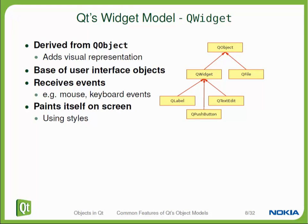QWidget is the base class for receiving events related to the windowing system, like mouse clicks, keyboard input, and resizes. This is functionality added on top of QObject. QWidget therefore also takes care of painting. A QObject that's not visible doesn't require painting at all. A QWidget in the base class paints just a regular gray rectangle, and classes that inherit QWidget will change this to look like something more familiar, like a button or a label.